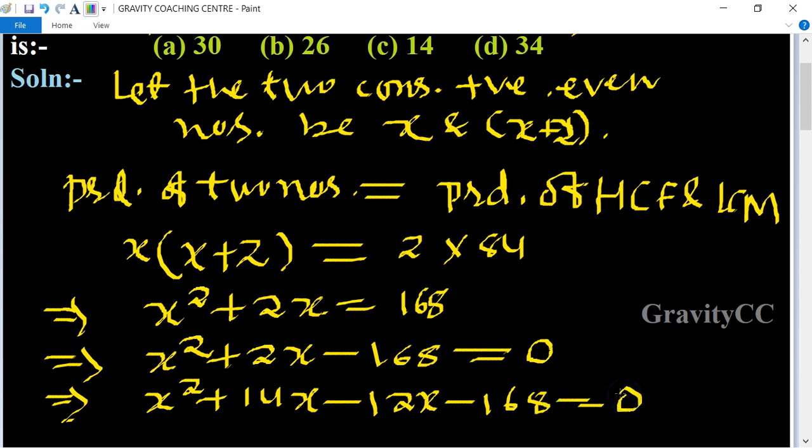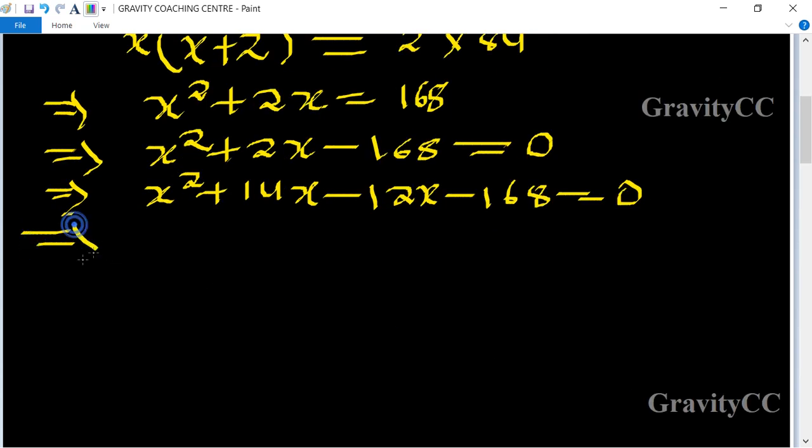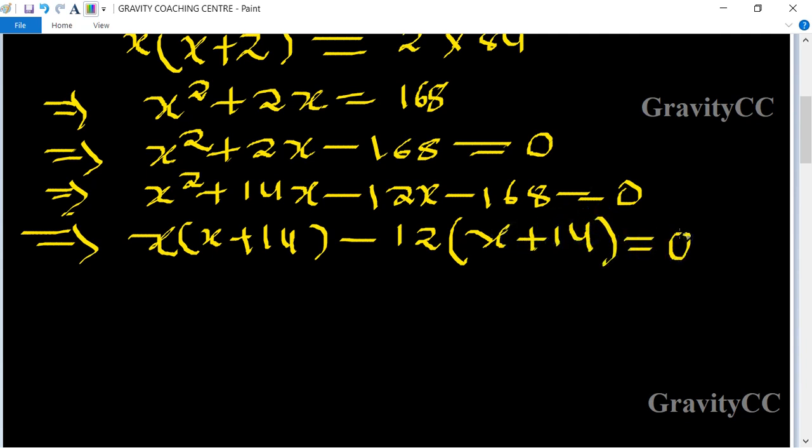So x squared plus 14x minus 12x minus 168 equals 0. Taking x as common from first two parts, so x plus 14, and taking 12 as common from last two terms, so x plus 14 equals 0.